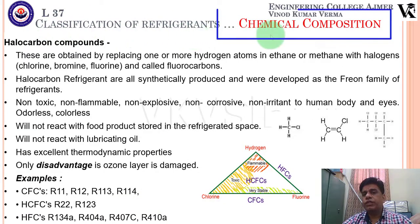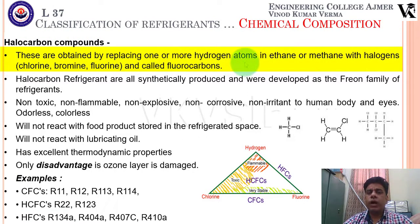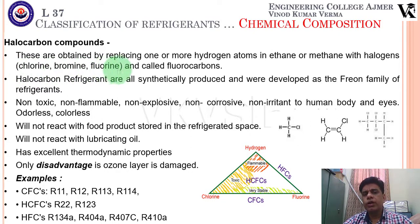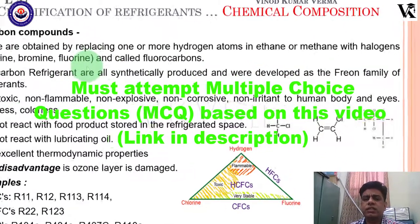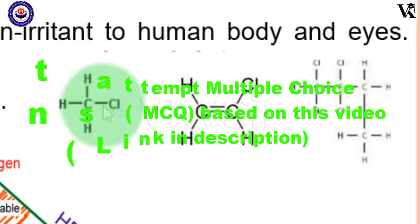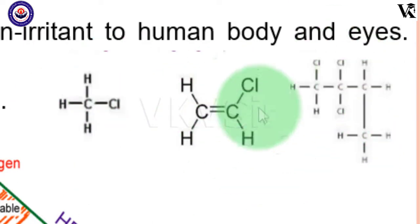Now let's discuss classification based on chemical composition. The first category is halocarbon compounds. These are obtained by replacing one or more hydrogen atoms in methane (CH4) or ethane with chlorine, bromine, or fluorine — these are called fluorocarbons or halocarbons. Looking at the diagram, in simple CH4 we attach chlorine in place of hydrogen, turning it into a refrigerant. The remaining atoms are hydrogen.